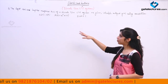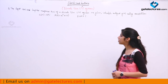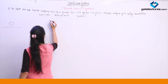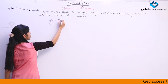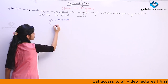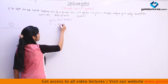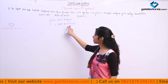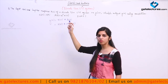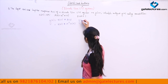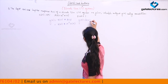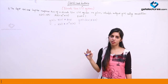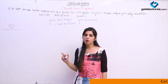Now, given input u[n] and impulse response α^n·u[n], they are asking you to calculate the output using the convolution integral. You know that output y[n] is given as convolution of input x[n] with the impulse response h[n]. This is going to be u[n] * α^n·u[n]. Since convolution is commutative, you can choose which signal to shift based on which is easier.